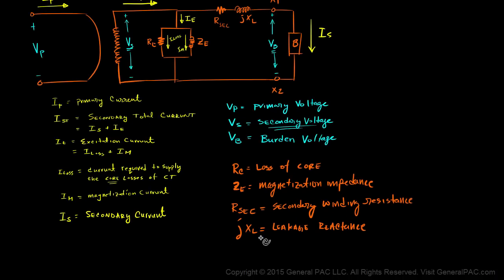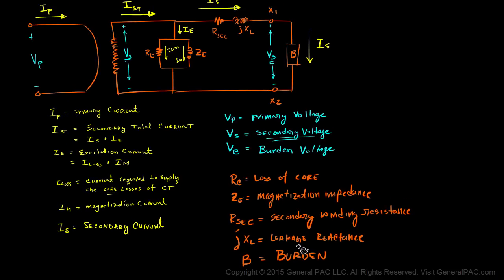Our most important impedance is called B, which is the burden. The burden is essentially all of the impedances connected from the X1 terminal to the X2 terminal — that includes the lead impedance and any relay impedance. If we have a series of relays all connected together, then all of those impedances are added up and are considered the burden of the current transformer.